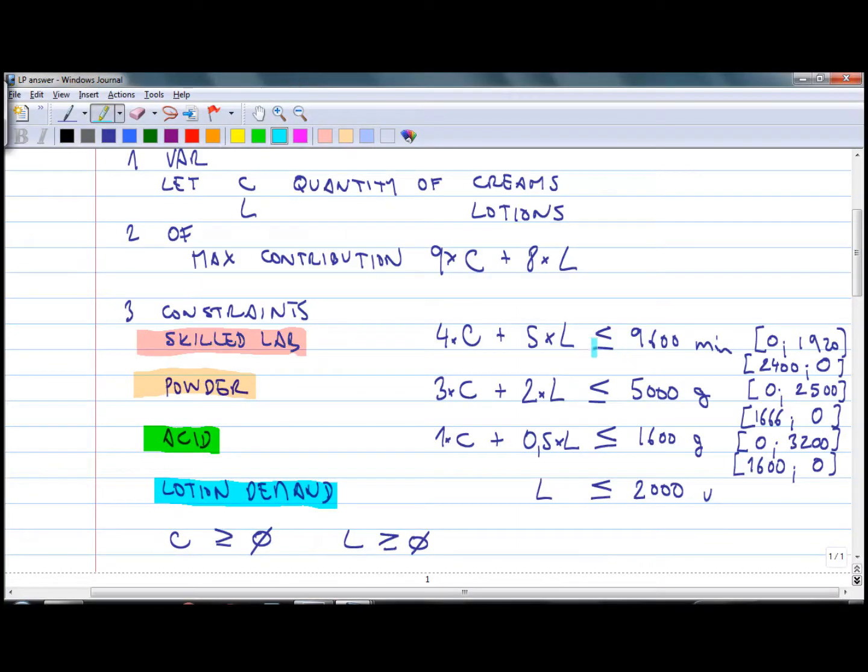For each constraint, which is basically a linear line, if there was equal here, we have calculated two coordinates, two points, which will allow us to draw a line. Now we need to go to the graph and put these points on the graph.